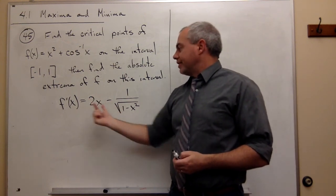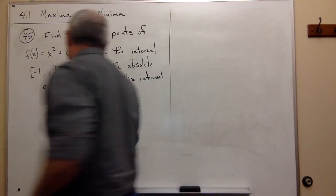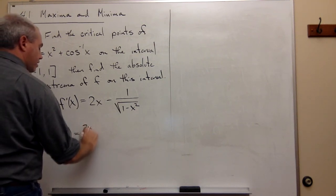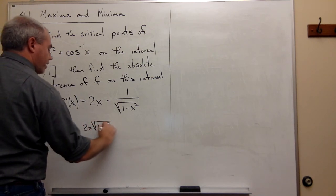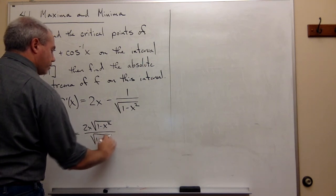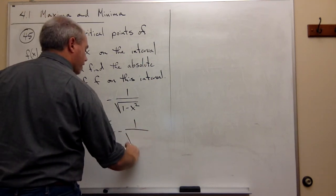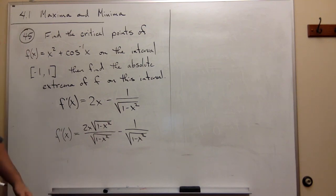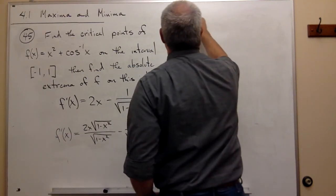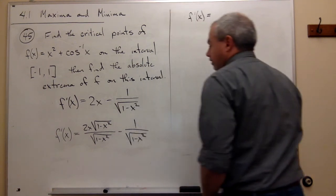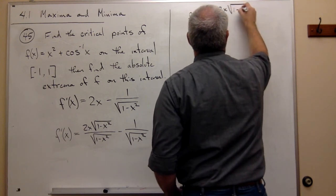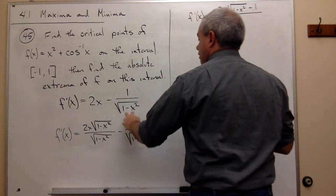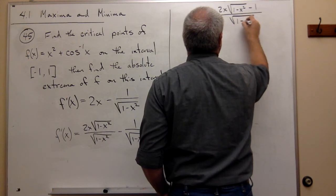I'm going to multiply the top and bottom of 2x by the square root of 1 minus x squared. If I do, I get f prime of x equal to 2x times the square root of 1 minus x squared over the square root of 1 minus x squared, minus 1 over the square root of 1 minus x squared. Combining these into one fraction gives f prime of x equal to 2x times the square root of 1 minus x squared minus 1, all over the square root of 1 minus x squared.